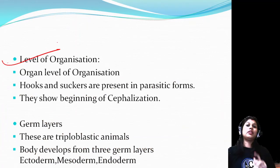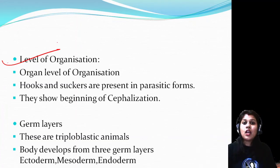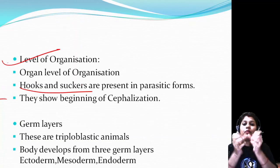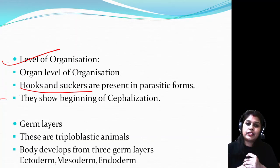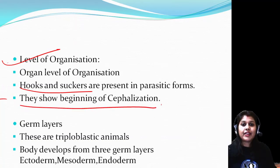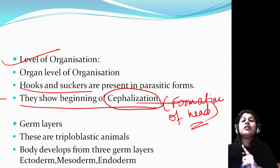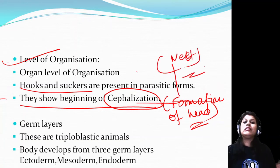Level of organization: cnidarians had tissue-level organization, but Platyhelminthes are more advanced - they have organ-level organization. In parasitic forms, there are small hooks at the front of the body and suckers near the mouth to suck blood or food. They show the beginning of cephalization, meaning the formation of a head. So Platyhelminthes is the first phylum where the formation of head is seen.